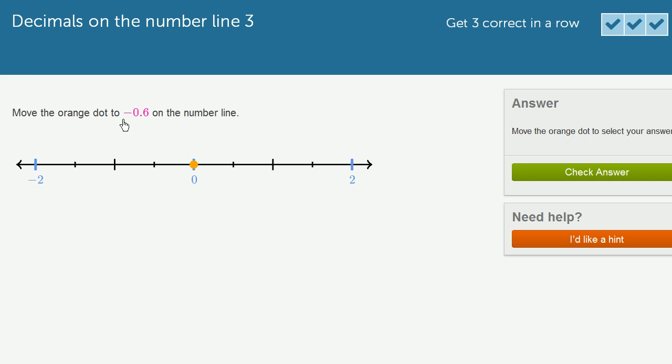We're asked to move the orange dot to negative 0.6 on the number line. So the dot right now is at 0. And let's see, this is negative 2, this is positive 2. So each of these big slashes look like it's 1.